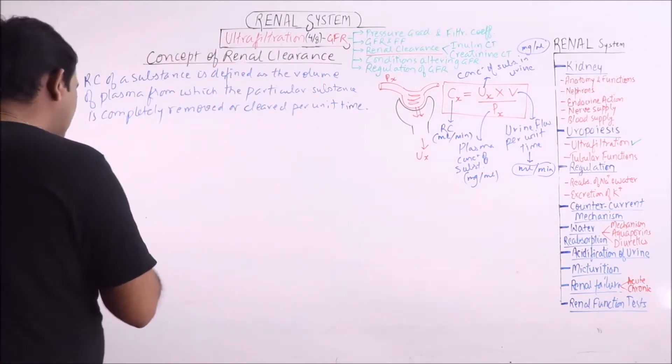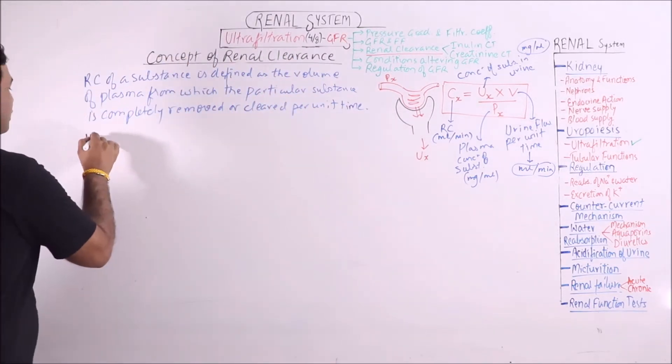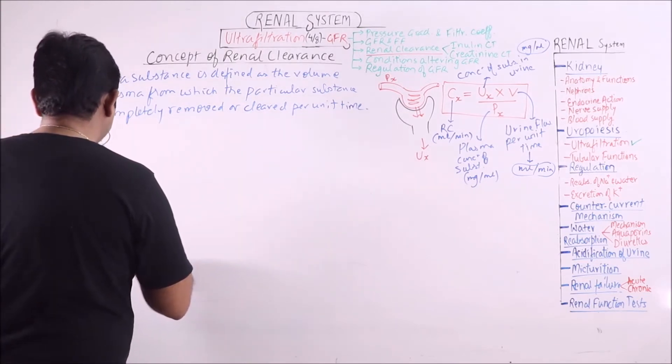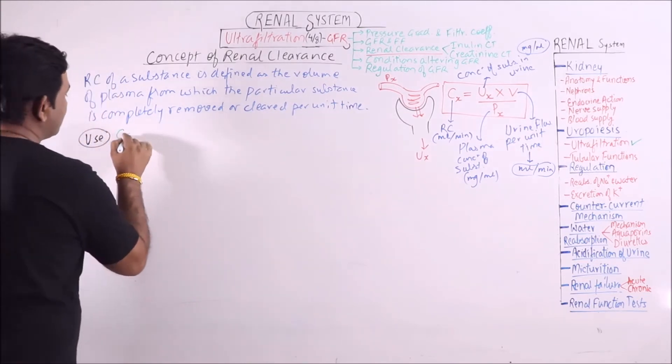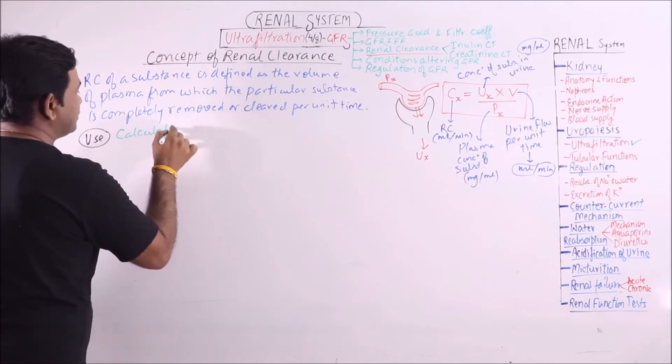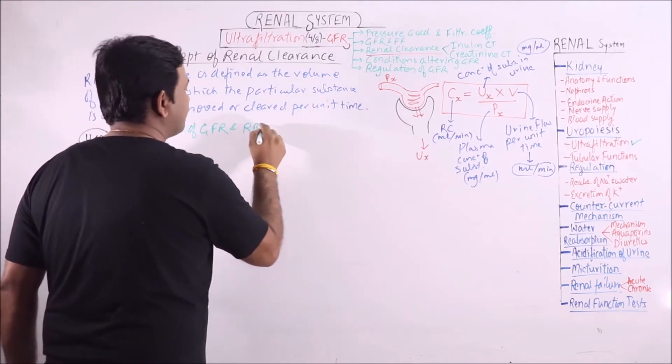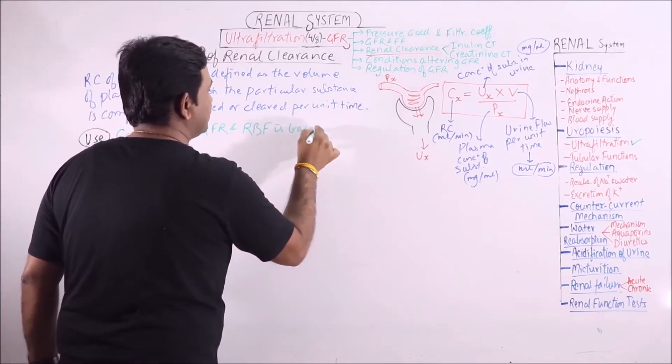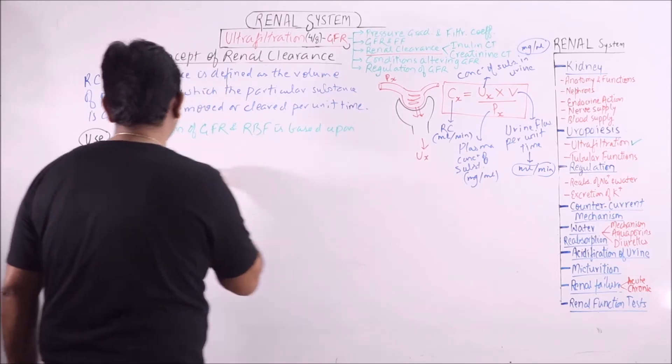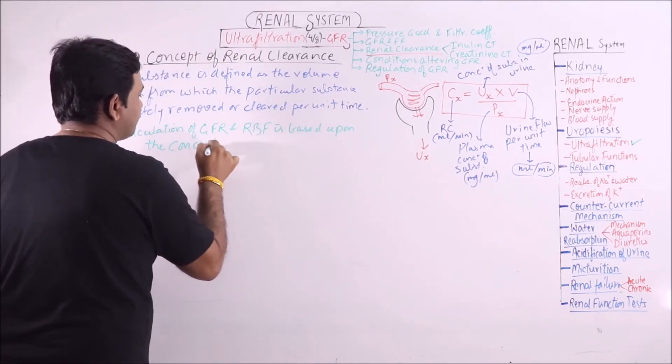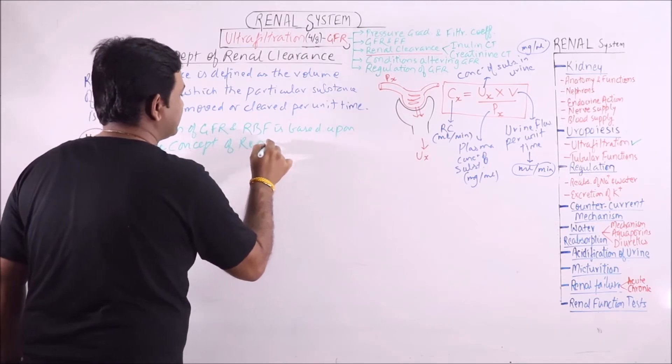Now, what is the use? The calculation of GFR and renal blood flow is based upon the concept of renal clearance.